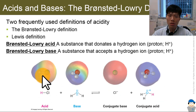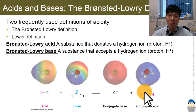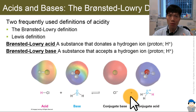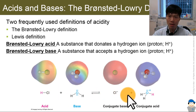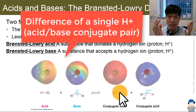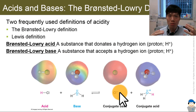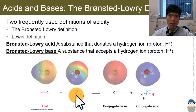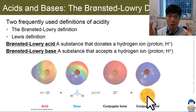Even if I do not give you the identity of the molecules before and after, you can still tell me which is the acid-base conjugate pair. Because an acid-base conjugate pair differs only by a single H+. You see, HCl and Cl- differ by an H+, so we know that they are the pair. Similarly, H2O and H3O+ also differ by a single H+.